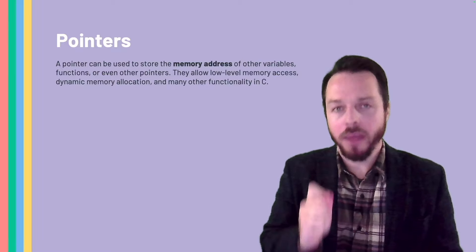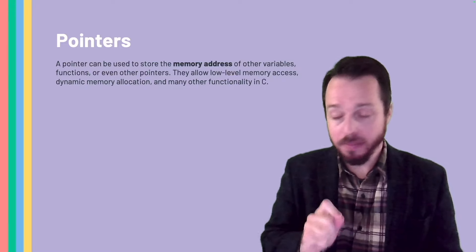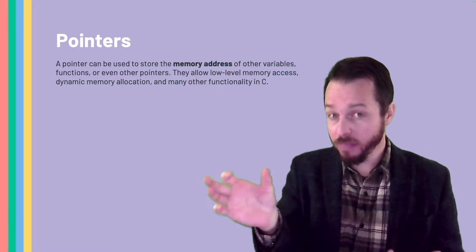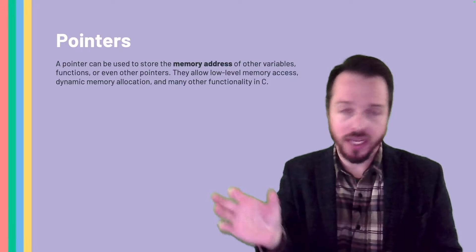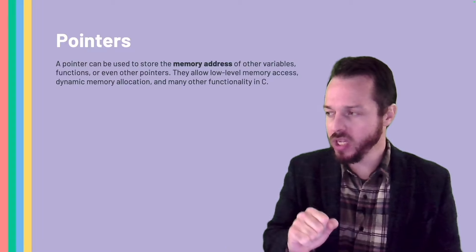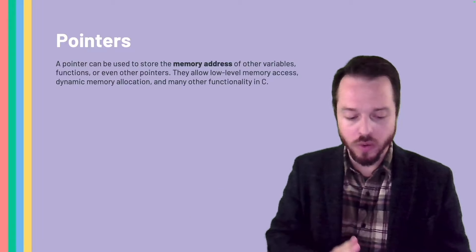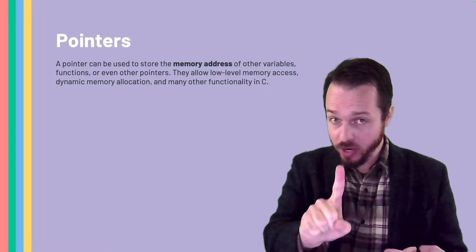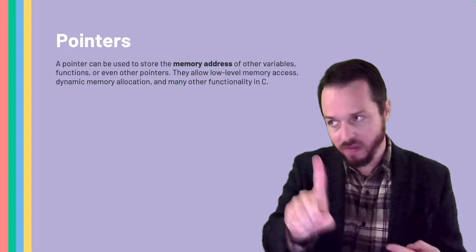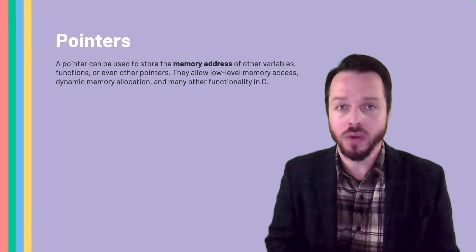Pointers allow low-level memory access. When I say low-level memory access, it means that we can have access to the actual memory address where something is located in memory, in RAM. The low-level memory access means that I can actually go and add to that pointer, I can subtract from that pointer. Whenever something is located in memory, I can actually go and offset. I have this low-level control of memory addresses. This is one thing that C allows us to do.